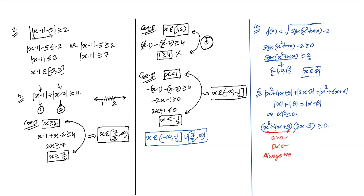Since x²+4x+9 is always positive (A > 0, D < 0), we can directly bring it to the denominator side and cancel. This leaves |2x-3| ≥ 0, which gives x ≥ 3/2. For students who haven't studied the 'always positive' quadratic property — it will be taught properly in the quadratic chapter. Don't lose confidence; these are function-related questions and quadratic properties come later.